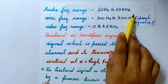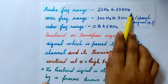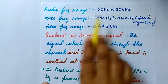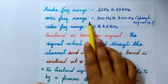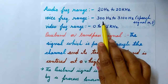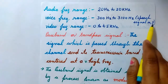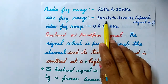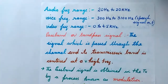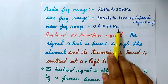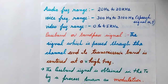We know about the audio frequency range: it is from 20 Hz to 20 kHz, which is the audible frequency range that can be heard by the human ear. The voice frequency range, which is of importance for the communication system, is from 300 Hz to 3100 Hz — this is the speech signal of a male or female, so the designing of a communication system is centered around this frequency range. The video frequency range is from 0 to 4.5 kHz.